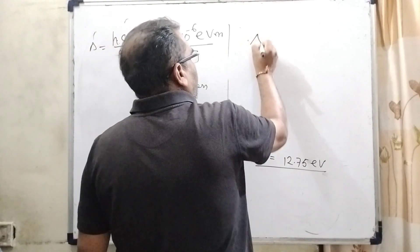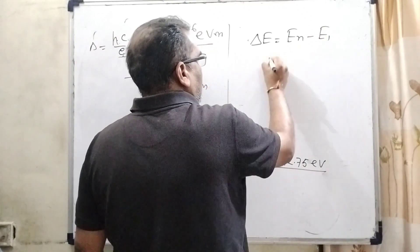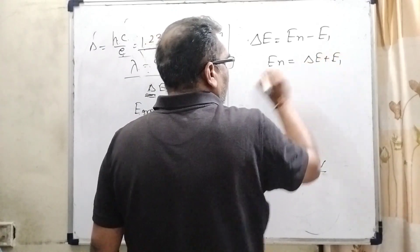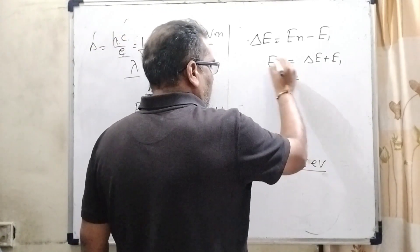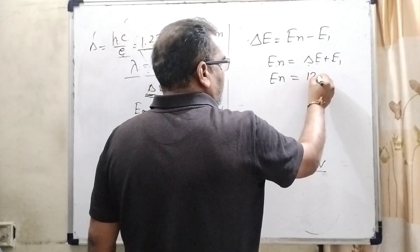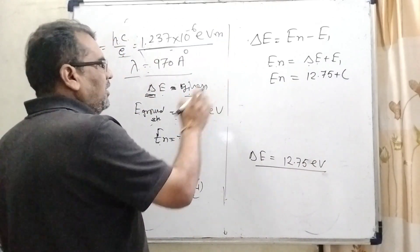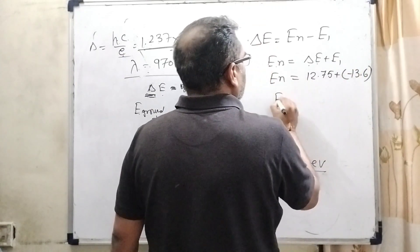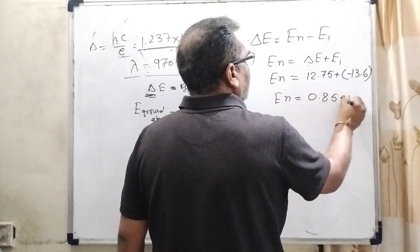As we know, change in energy equals final energy minus initial energy. So En can be written as delta E plus E1, where E1 is the energy of the ground level. Substituting: delta E is 12.75 and E1 is minus 13.6 electron volt. Therefore En equals minus 0.85 electron volt.